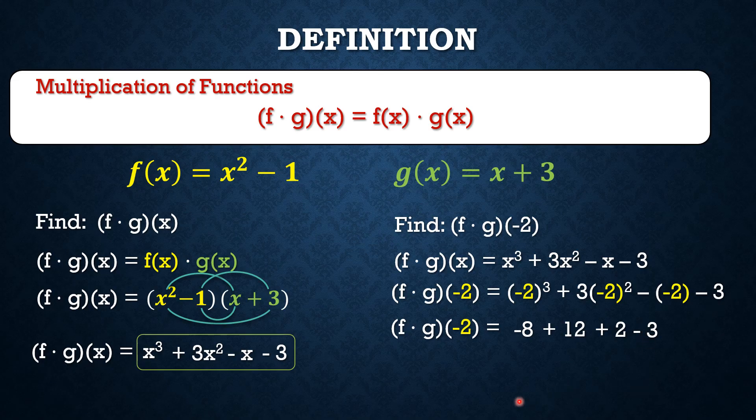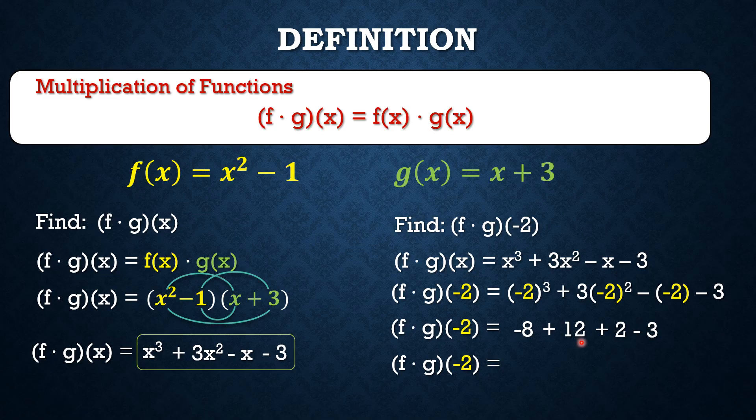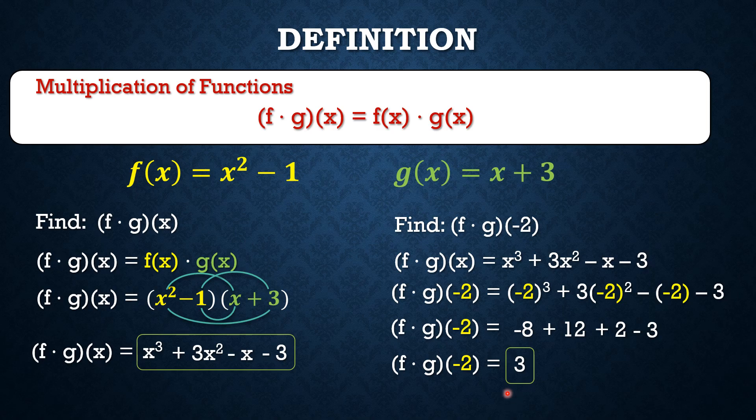By simplifying this further, let's combine them. And so we have negative 8 plus 12, positive 4 plus 2, positive 6 minus 3 and that gives us positive 3. And this is now (f · g)(-2), which is positive 3.